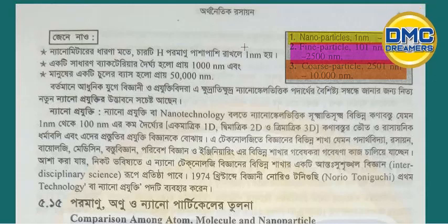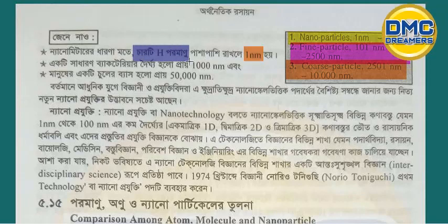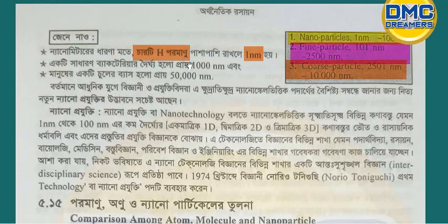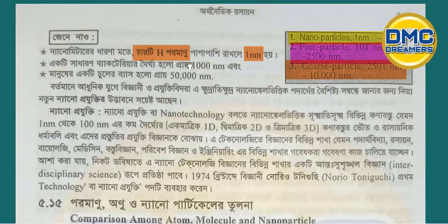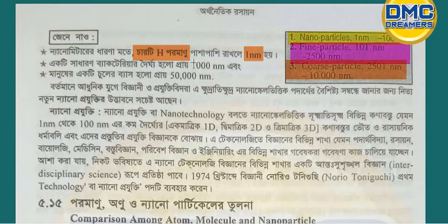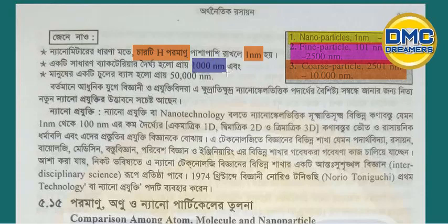What is 1 nanometer? The diameter of the hydrogen atom is approximately 1 nanometer. The bacteria is about 12 nanometer. And the human body cell is around 25,000 nanometer.